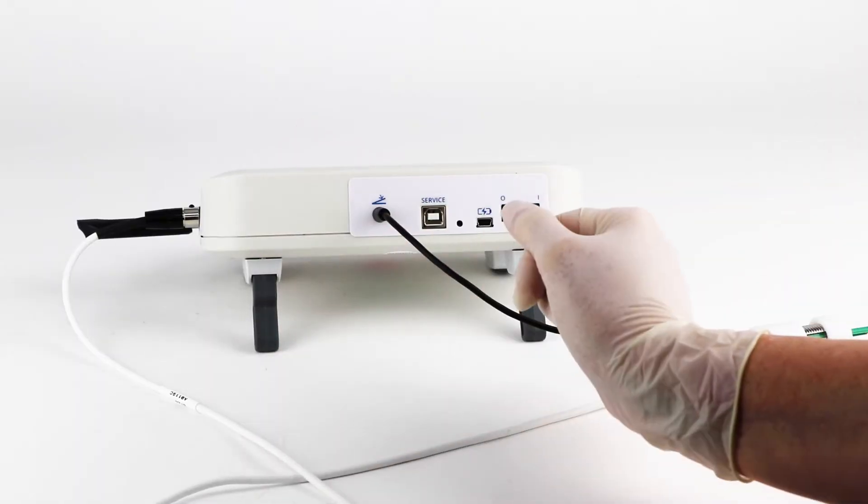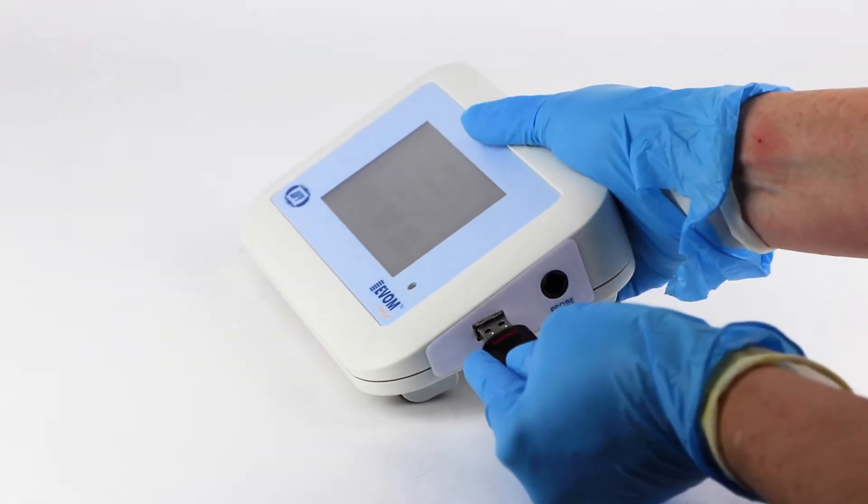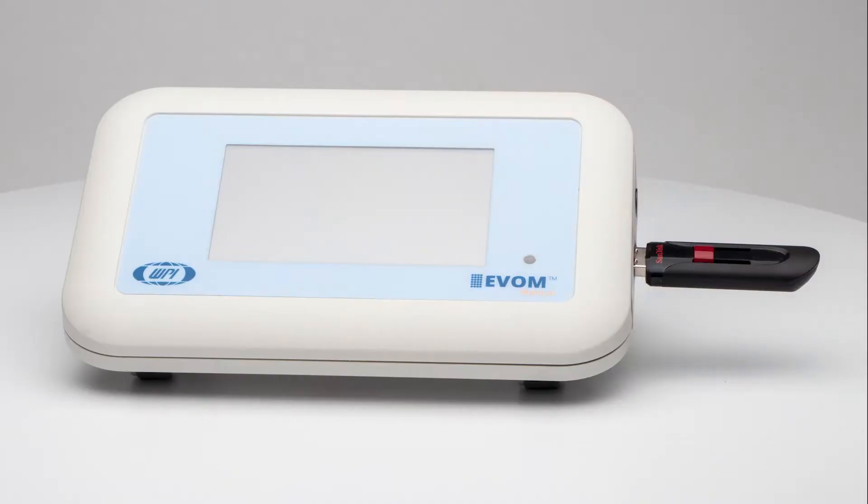Power on the Evon Manual using the power switch on the rear panel. Then insert the USB thumb drive provided with the system into the USB port on the side of the meter.